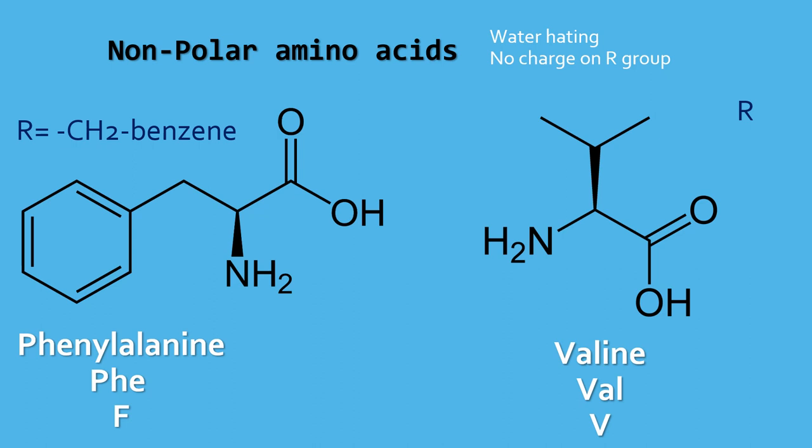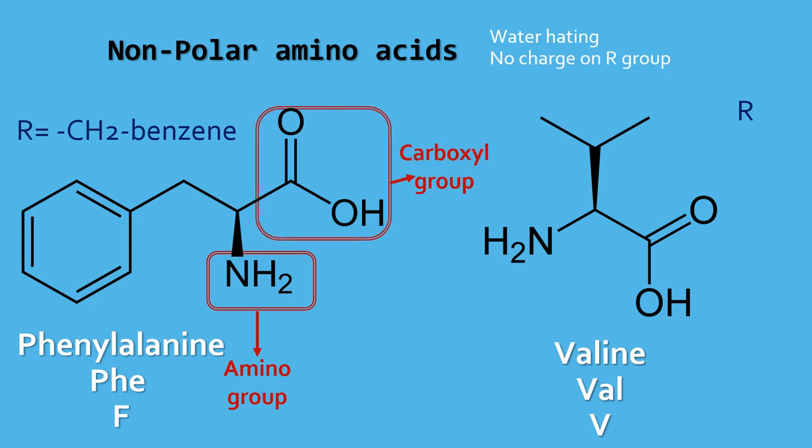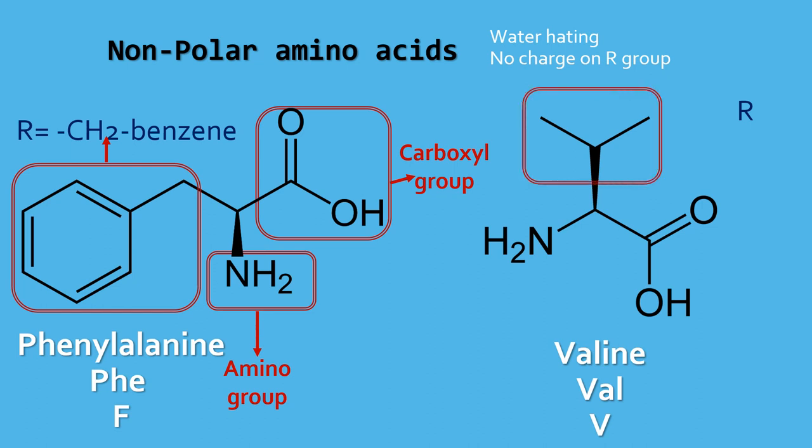Phenylalanine has a three-letter representation as PHE and one-letter representation as F. Valine has a three-letter representation as VAL and one-letter representation as V. One-letter and three-letter representations are very important when representing protein structure. In phenylalanine, both amino group and carboxylic group are attached to the same alpha carbon atom. The R group in phenylalanine is CH2-benzene. In valine, the R group is CH(CH3)CH3. It is also classified as a branched chain amino acid.